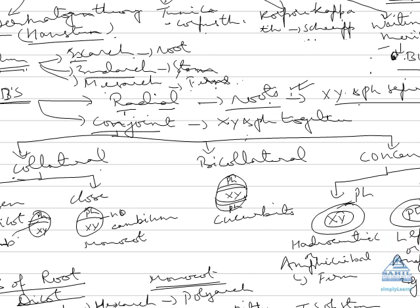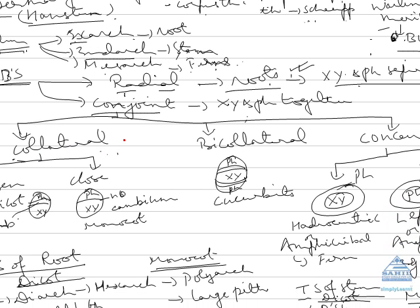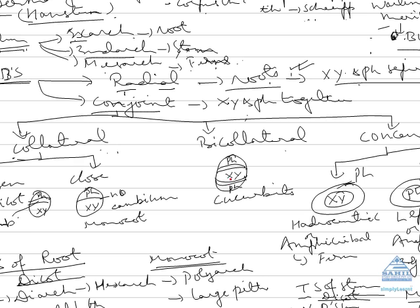Now comes three types: first is collateral, means xylem and phloem are side by side. Second is bicollateral, if xylem is surrounded on both sides by phloem and double layer of vascular cambium is found, example in cucurbits, while concentric...